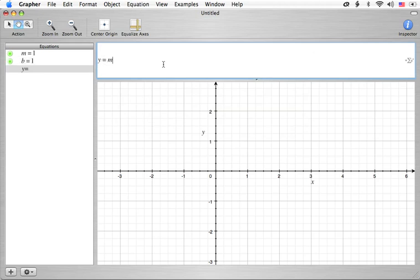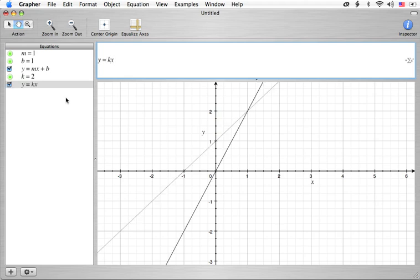So y equals mx plus b. Let's hit return. We get a line that looks a little bit like this. Now, a direct variation curve is very similar to this type of equation. Basically, we're going to have some constant, which in this case, let me make it a little different. Let's make this k equal 2. And we're going to have y equals k times x. This is the direct variation equation.